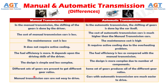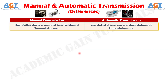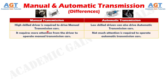Number 8. Manual transmission cars are not easy to drive, whereas cars with automatic transmission are much easier to drive. Number 9. A high skilled driver is required to drive manual transmission cars, whereas less skilled drivers can also drive automatic transmission cars. Number 10. It requires more attention from the driver to operate manual transmission cars, whereas not much attention is required to operate automatic transmission cars.